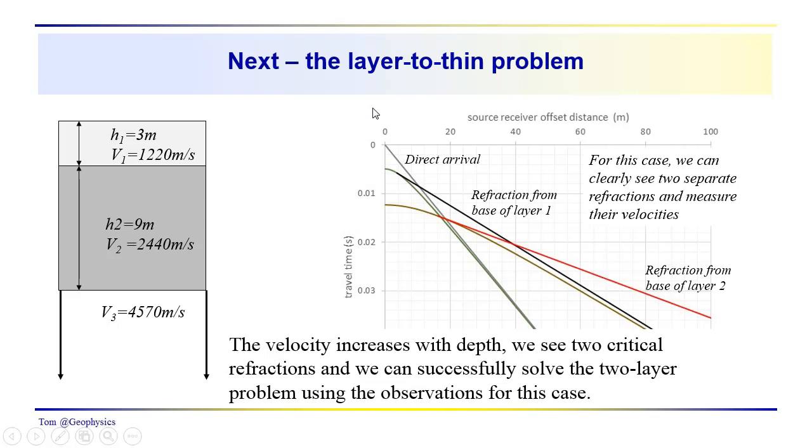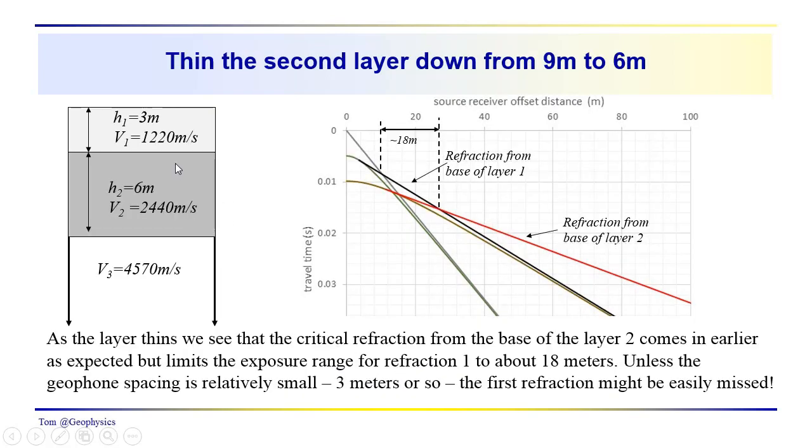Now this is the layer-too-thin problem. Now with the layer-too-thin problem, we've got resolvable refractions. We get a V1, V2, and a V3. We can see the critical refraction from the base of layer 1. We can see the critical refraction from the base of layer 2. No problem. We would treat this as a two-layer problem, and we shouldn't have any issues with that. Again, we don't always see the reflection events, but we can see the refractions. We can use the refraction time intercept or even the crossover distance here in order to estimate thicknesses as we go down. So this would be the typical situation that you would get in a two-layer case, three-layer case, rather.